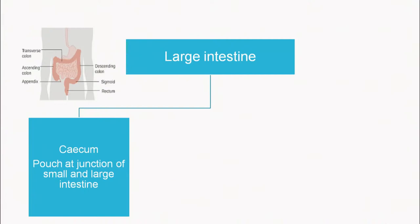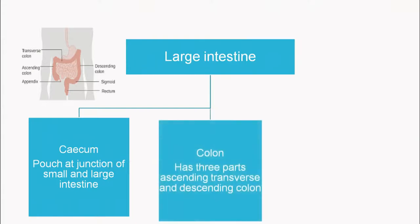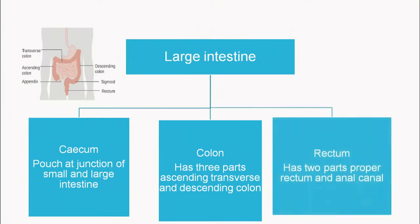The small intestine extends into the large intestine, which has three parts: the cecum — a pouch at the junction of the small and large intestine — then the colon, with ascending, transverse and descending sections. The colon ends in the rectum, which has a rectum and anal canal through which waste material exits the body.